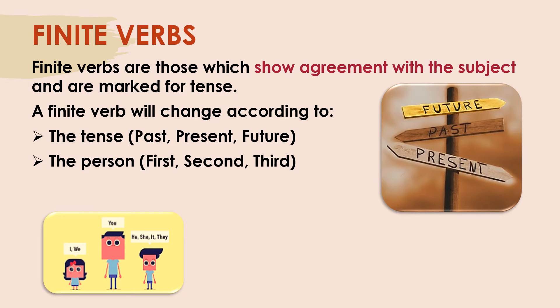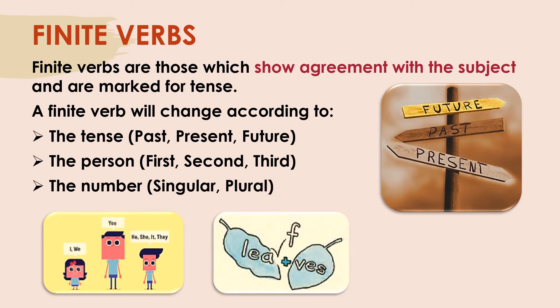For example, I and we are the first person. When you talk to someone else, that is 'you,' which becomes the second person. And when I am talking to you about someone else — he, she, or they — they are in the third person. A finite verb will also change according to number, meaning singular or plural, like one leaf and many leaves.